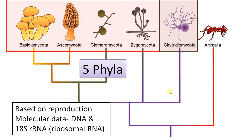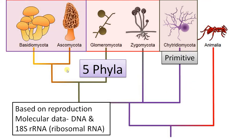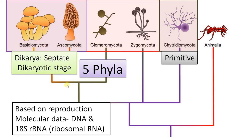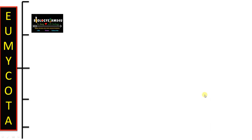The most primitive group is Chytridiomycota — the chytrids. They are the only group with flagellated cells in their life cycle. Basidiomycota and Ascomycota together form the Dikarya, the most advanced group, with septate well-developed mycelium and a prominent dikaryotic stage — two nuclei of different strains without fusion in a common protoplasm for a long time. Molecular studies suggest Glomeromycota is a sister group to the Dikarya.